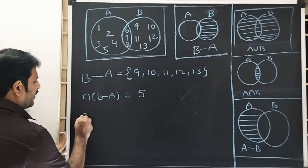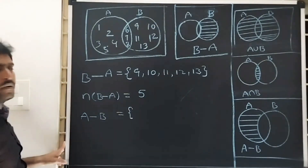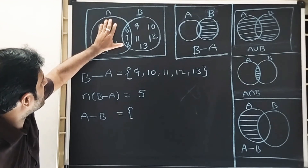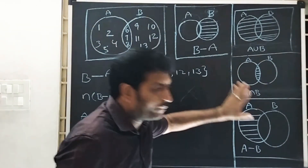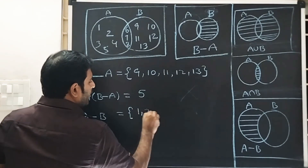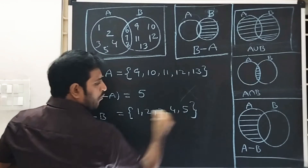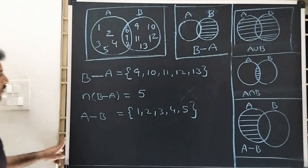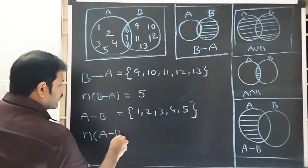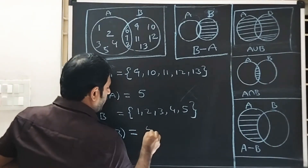A minus B — the yellow remaining elements. This is the partial amount of A minus B. The elements are one, two, three, four, five. How many elements are there? N of A minus B elements are five.